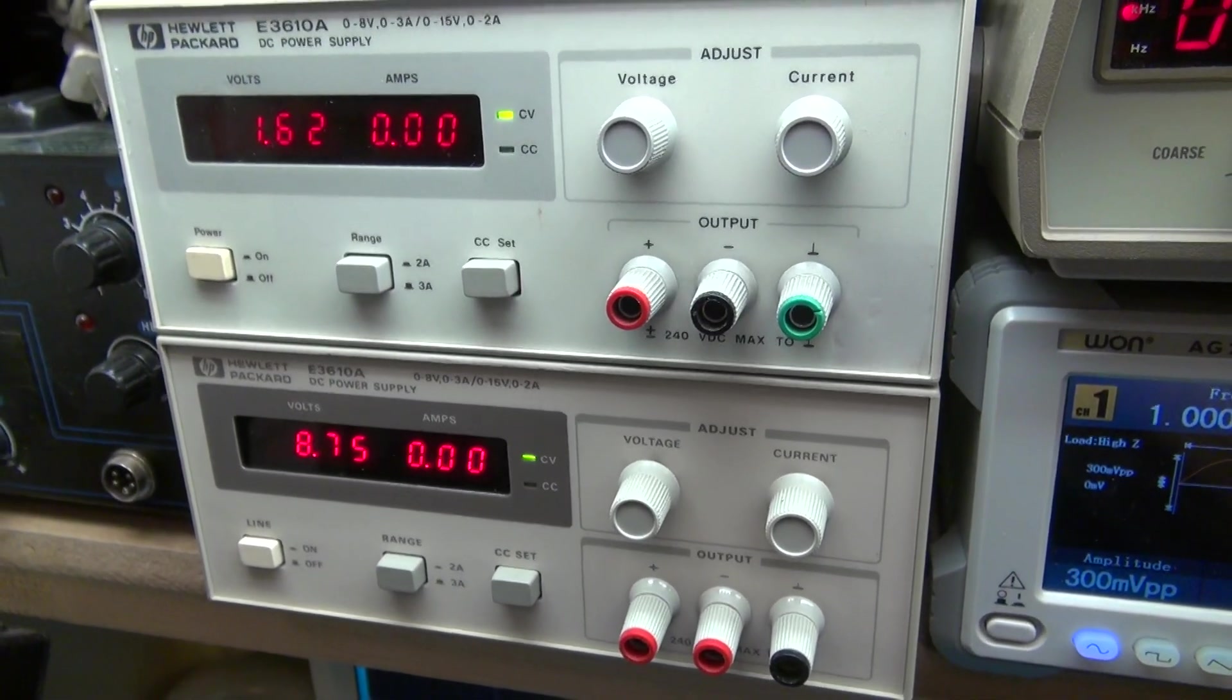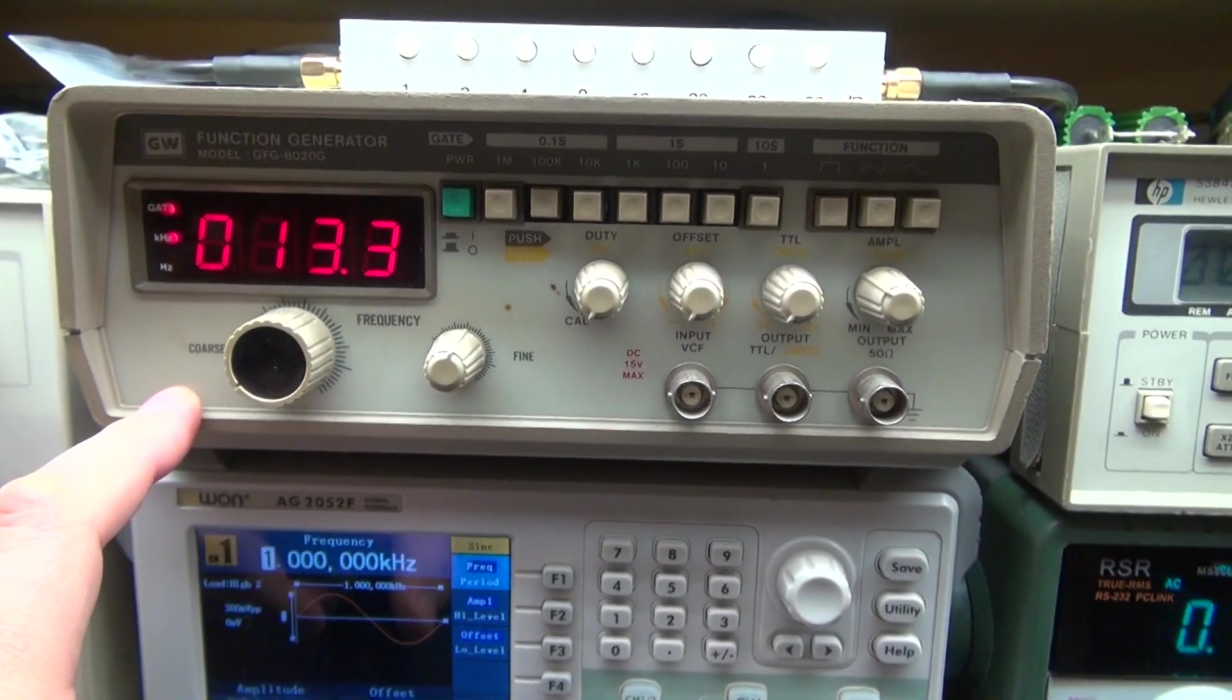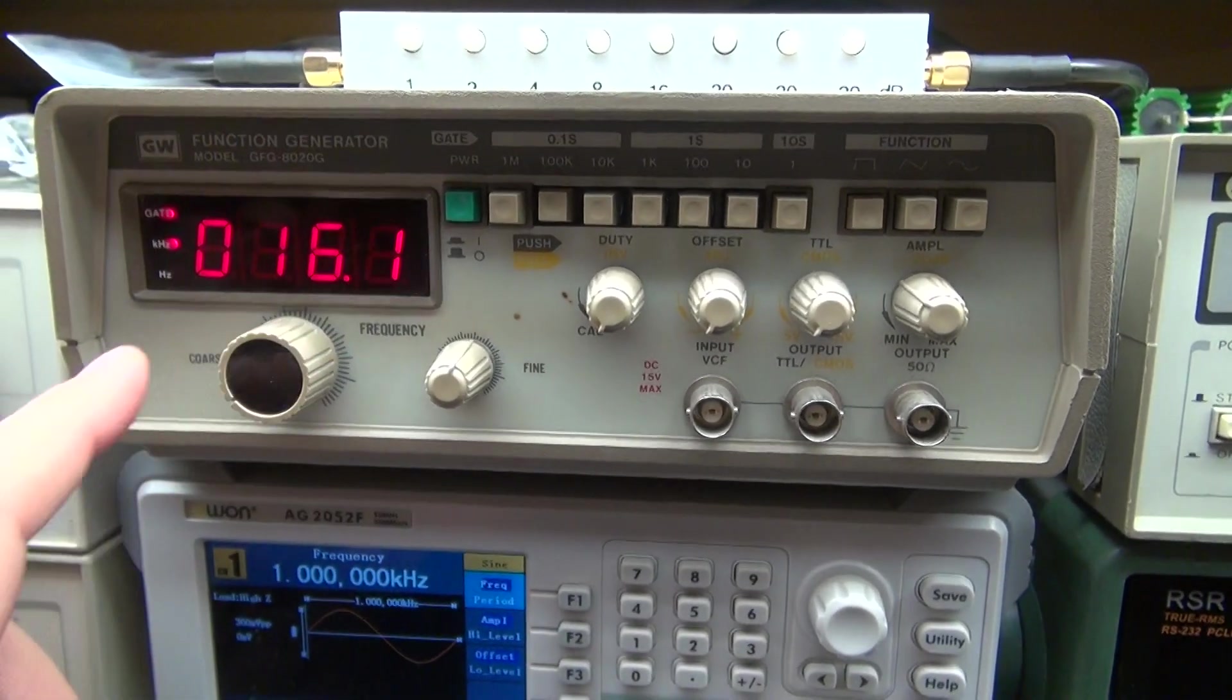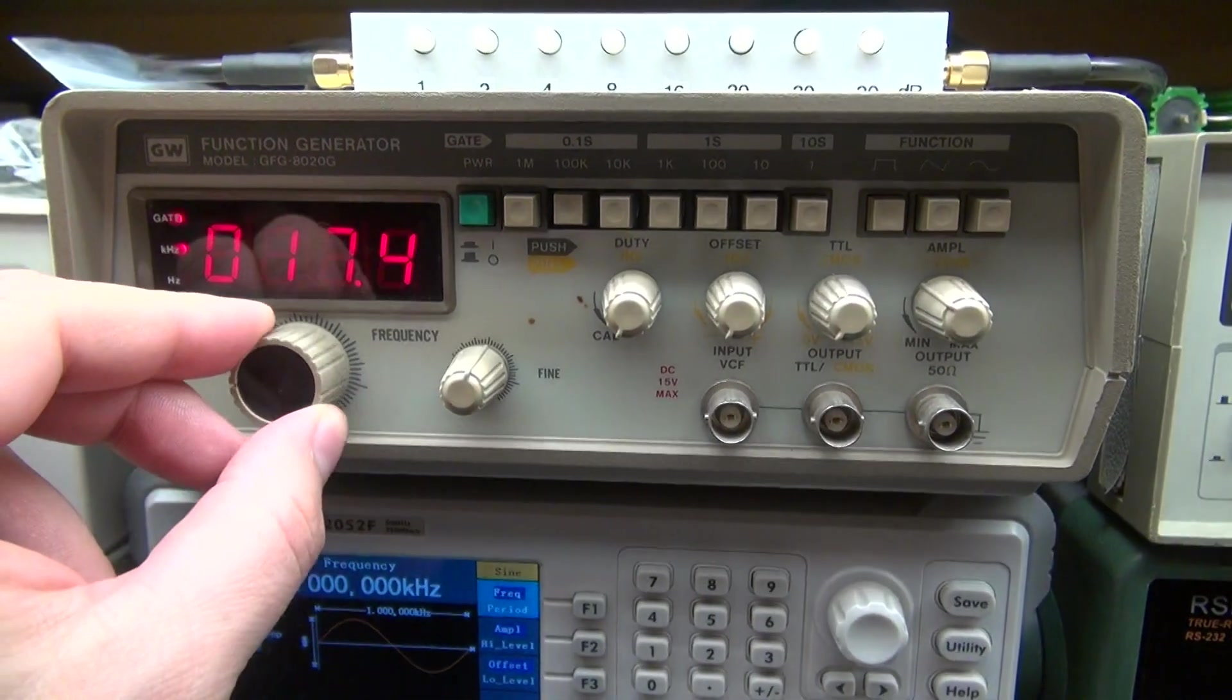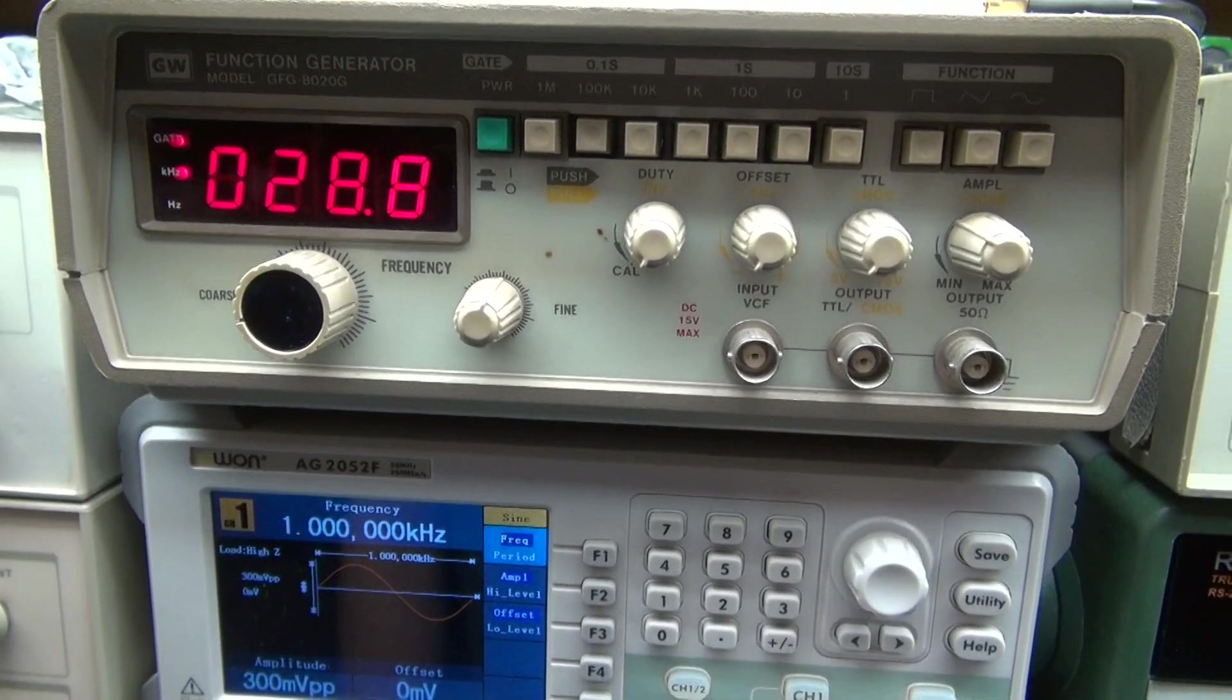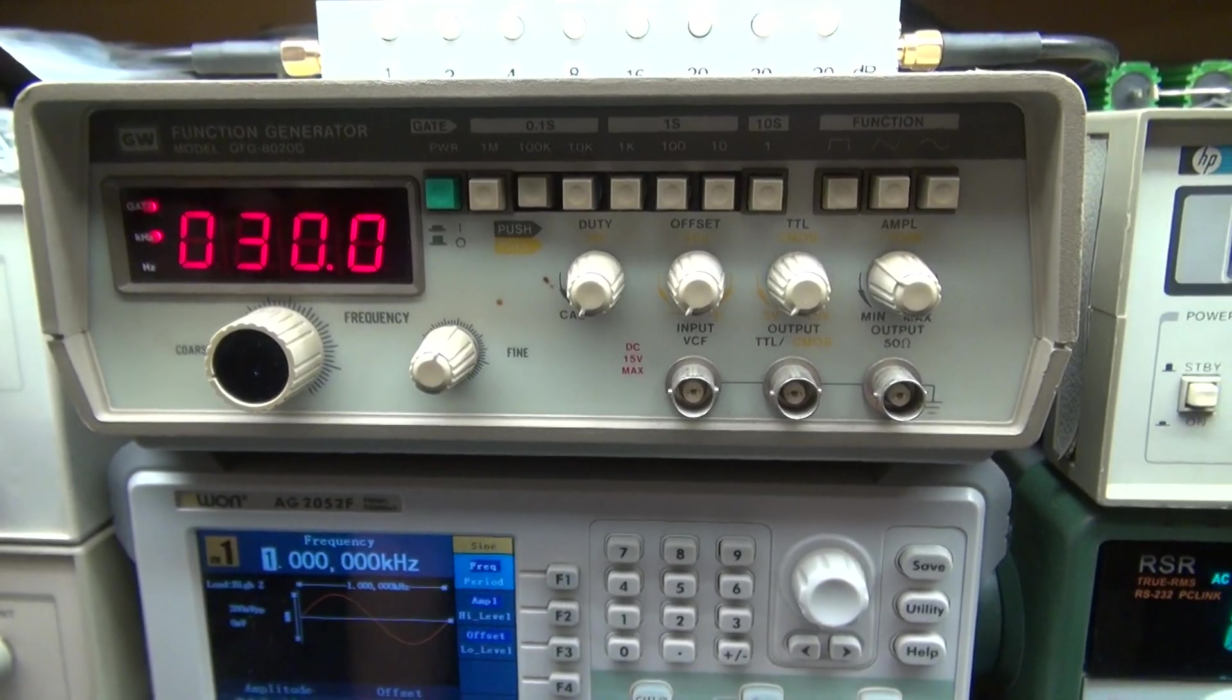I have this instrument here which is a GW, I forget what GW was, as a function generator. This is one of my first generators I've ever had. I've had this for a very very long time. It is a little quirky, a little bit troublesome to understand how it's what it's reading and what it's doing. It kind of floats around a bit as you can see, it's not really fixed. Very general purpose function generator. All you need is something to throw a signal into an amplifier, something like that, you can get away with.